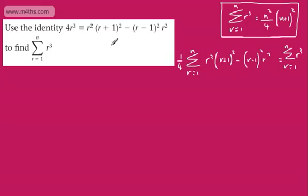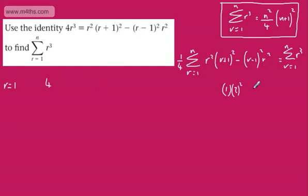By using the method of differences, if we sum this and take one quarter of it, it will equal the required sum. Starting with r equals 1: the first part gives 1 squared times 2 squared, which is 4. Substituting into the second part gives 0 squared times 1 squared, which is 0.